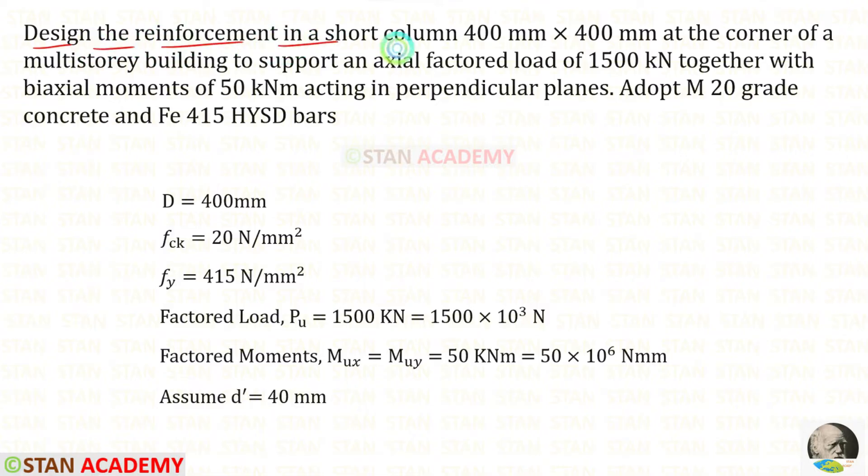Design the reinforcement in a short column 400 millimeter by 400 millimeter at the corner of a multi-story building. The size of the square column D is given as 400 millimeter to support an axial factored load of 1500 kilonewton. The factored load PU is given in kilonewton, we can convert that into Newton. Together with biaxial moments of 50 kilonewton meter acting in perpendicular planes. Both of the moments MUX and MUY are given in kilonewton meter, we can convert them into Newton millimeter.